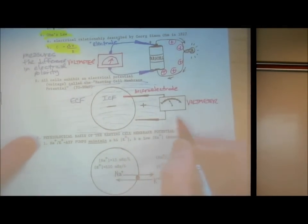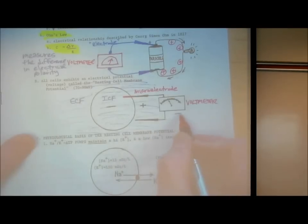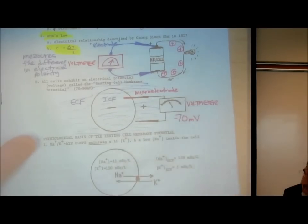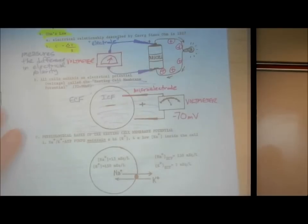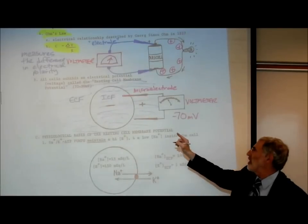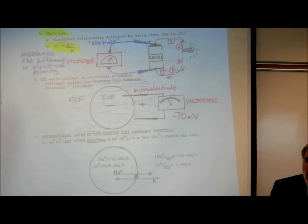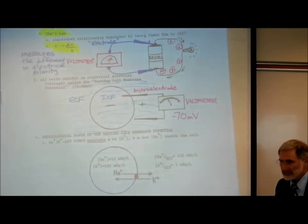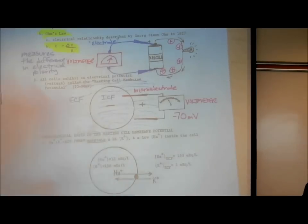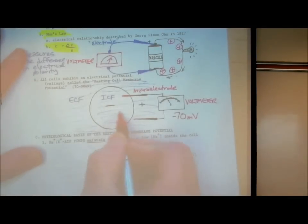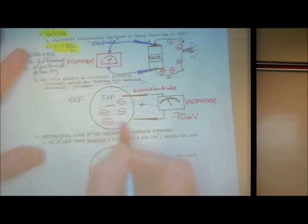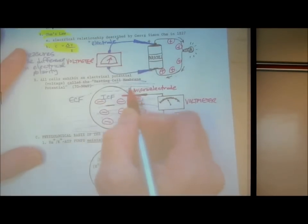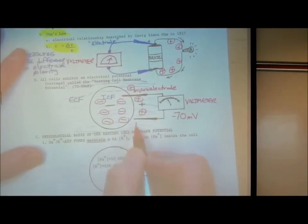They did it, and indeed they found there was a voltage — approximately 70, 80, or 90 millivolts — negative on the inside, positive on the outside. Meaning there are more negative charges on the inside of the cell than positive, and more positive charges on the outside than negative.